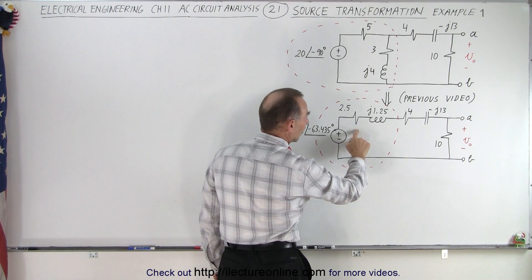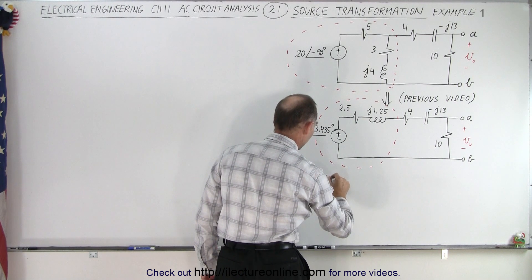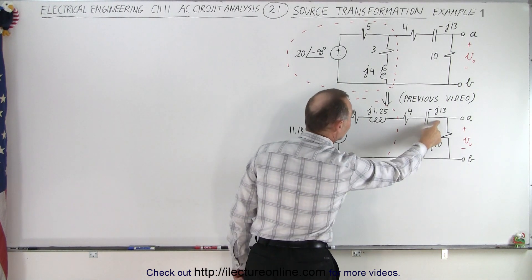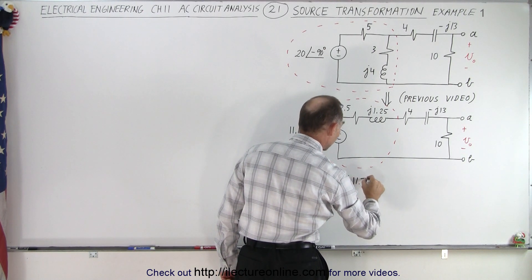Z total is equal to 10 plus 4 plus 2.5, which is 16.5. And a minus j13 plus a j1.25, that would be minus j11.75.